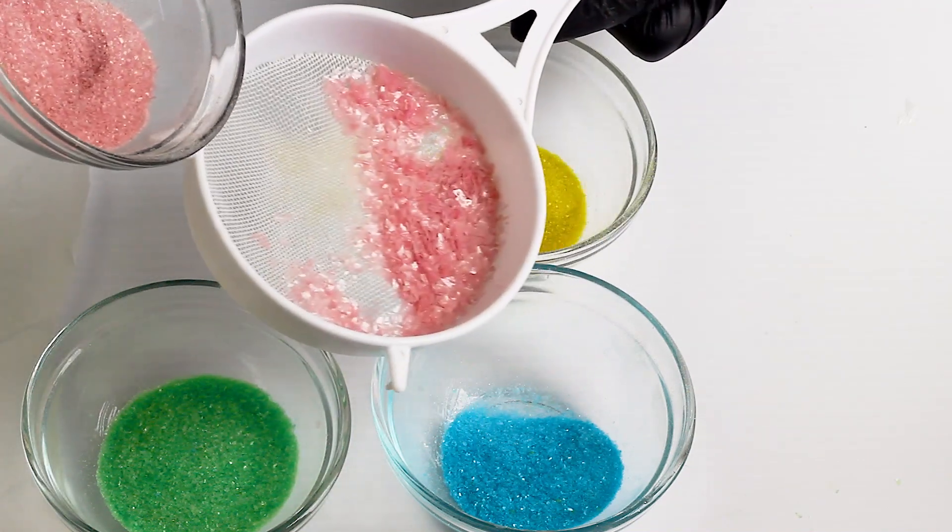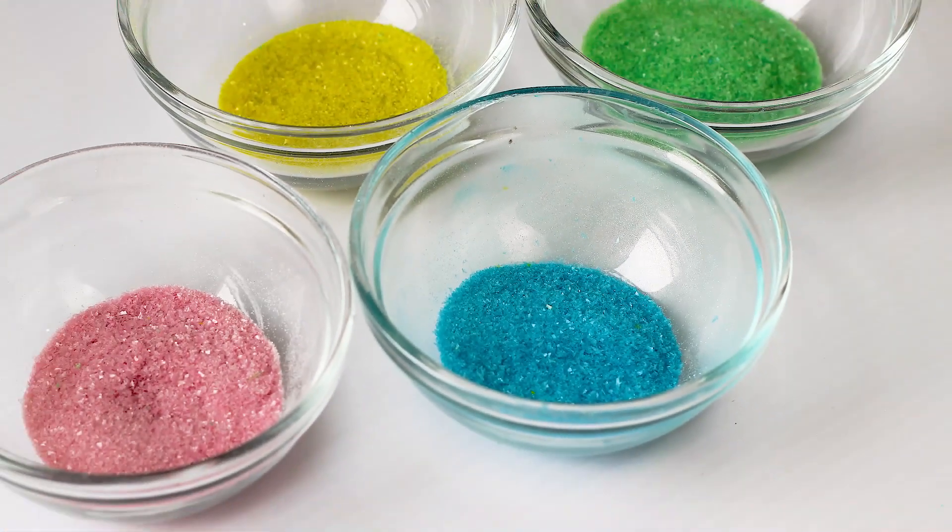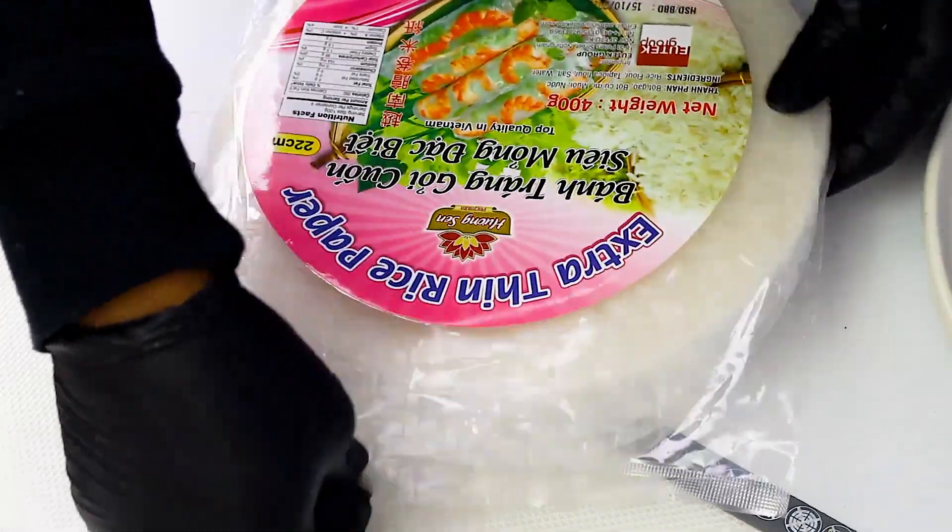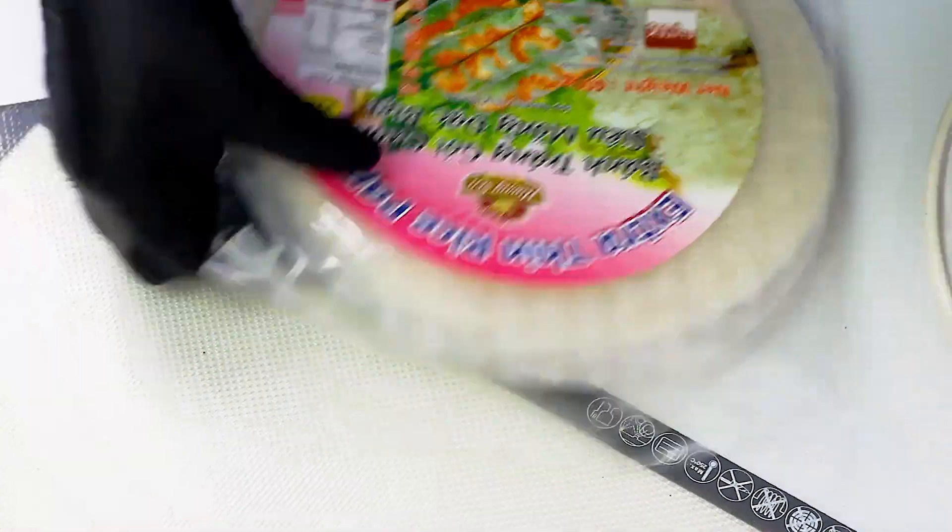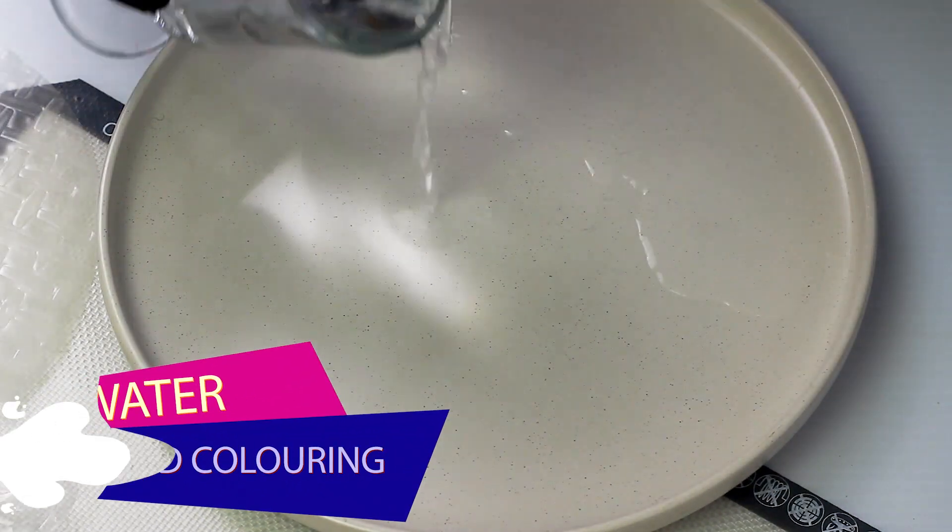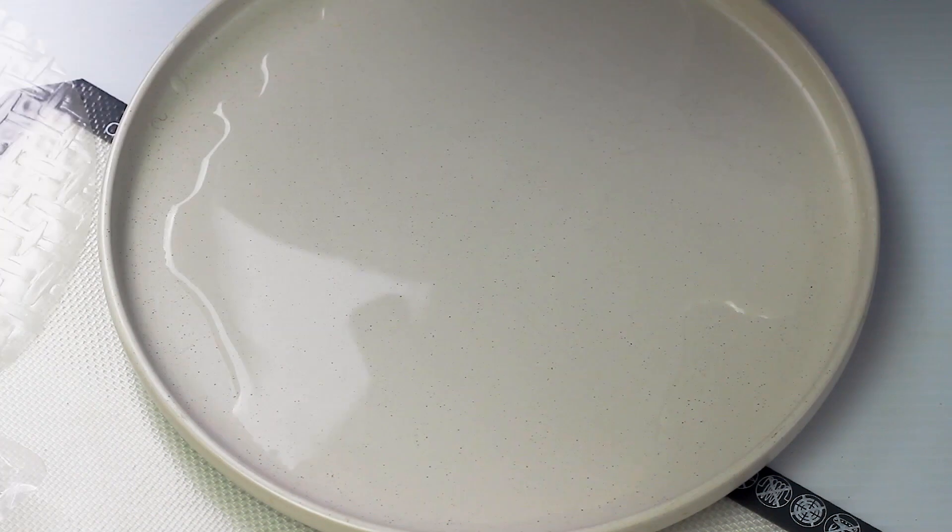Imagine my excitement when I realized you can just use rice paper and water and food coloring of course to create your own desired colors of edible glitters.